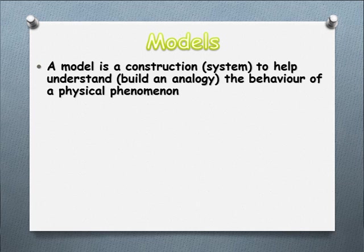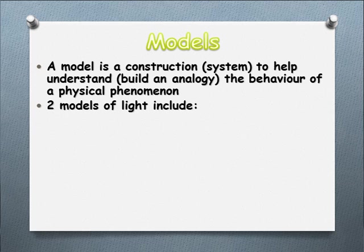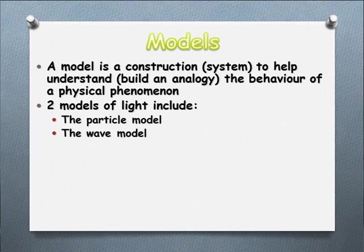Why do we use models? It's effectively a way of explaining something that we can't directly observe or directly explain, using things we're familiar with — we're building an analogy, explaining something because it behaves like something we know well. For light, we have two different models: the particle model and the wave model. We'll look at those in depth over the next couple of weeks.